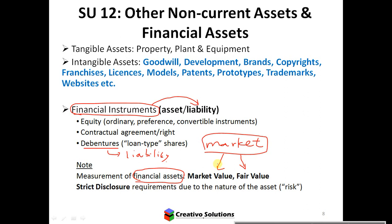Fair value determines what the asset is actually worth today, and there's very strict disclosure because these assets are risky. You could have bought something today that's worth X, and tomorrow the price can change — you have to record that appropriately and show the actual current worth of the asset.